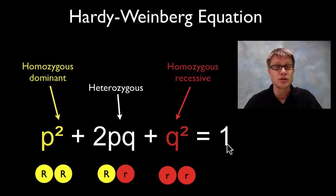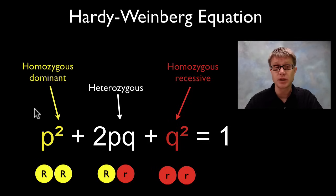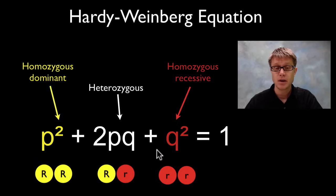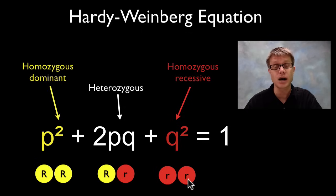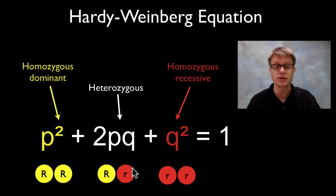Lots of times biology students try to solve Hardy-Weinberg problems by simply plugging numbers in, but that's not how it works. P² represents the frequency of individuals who are homozygous dominant — they have both copies of the dominant gene. Q² tells us the individuals who are homozygous recessive — both copies of the recessive gene. And 2PQ gives the frequency of individuals who have one of each, called heterozygous for this trait.